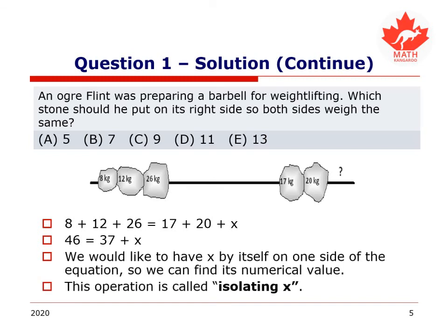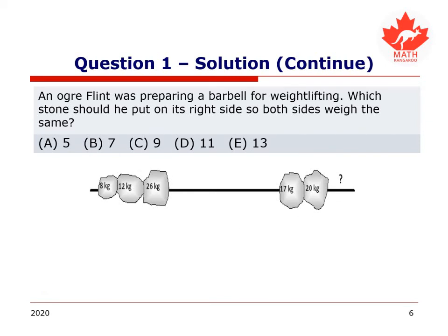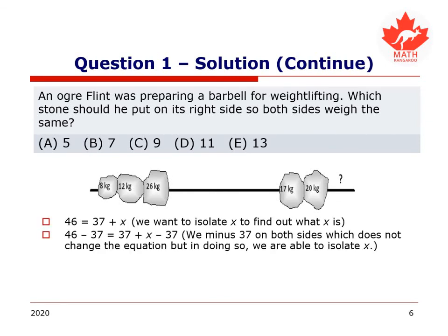In terms of the original ogre, he could have taken the equivalent of 17 kilograms and 20 kilograms away from both sides to see what he needs to balance out. So minus 37 on both sides. On the one side, we would only have an x. On the other side, we would only have a 9. That is our final answer. x equals 9. If we put 9 kilograms where the question mark is the barbell will be perfectly balanced.